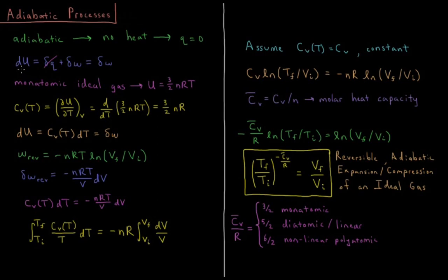The heat change that occurs during some infinitesimal change in the system — du, du being an exact differential because internal energy u is a state function — equals dq plus dw. Change in energy is equal to the heat plus the work. Heat and work are both path functions, so they have inexact differentials. For adiabatic processes, dq equals zero, so the change in energy for an adiabatic process is equal to the work done during that process.